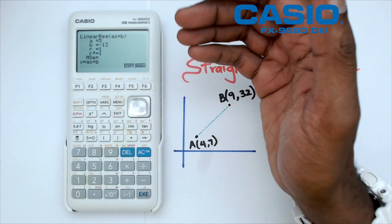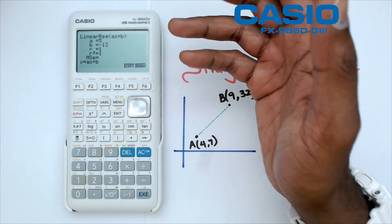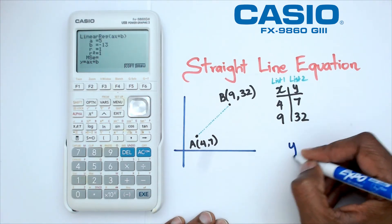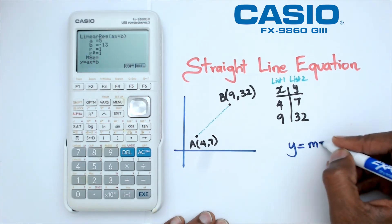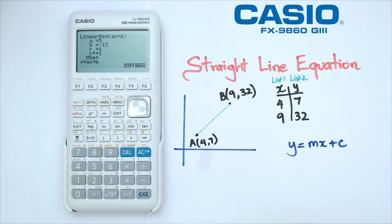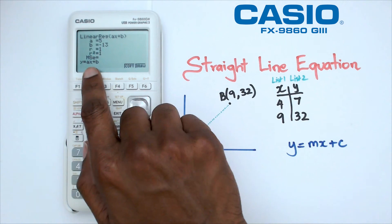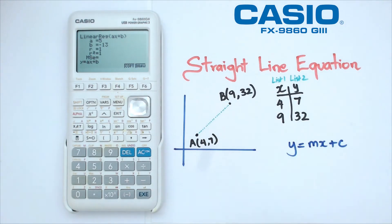Now you might be wondering, isn't the straight line equation Y equals MX plus C? You're absolutely right, because we do have straight line equation which is Y equals MX plus C. However, in this calculator what you're going to be using is aX plus B. So all you have to do is write the equation down underneath it, which is Y equals aX plus B.